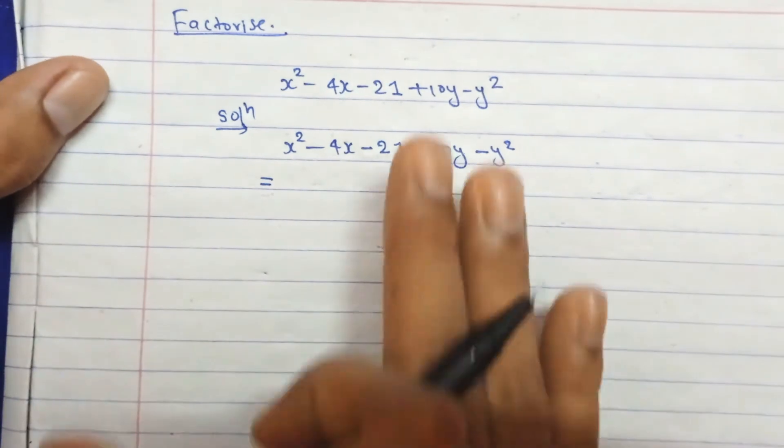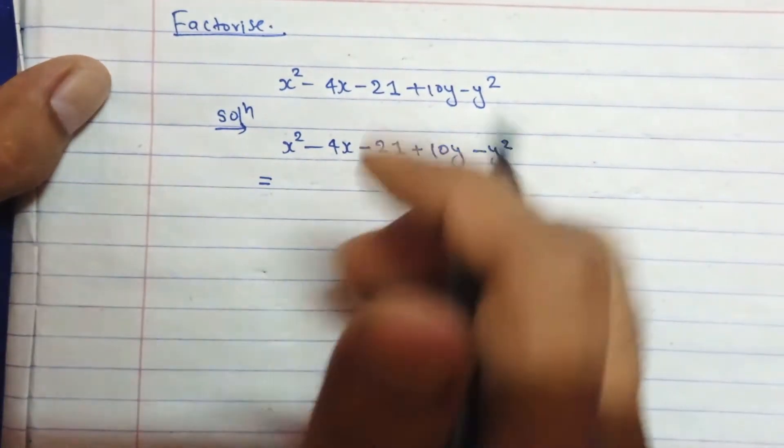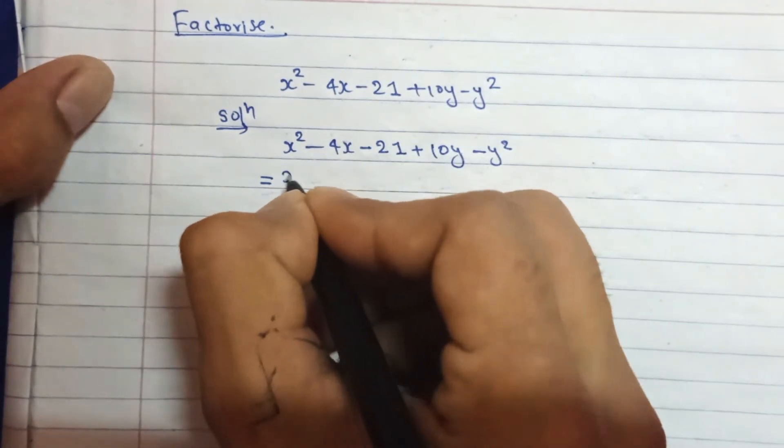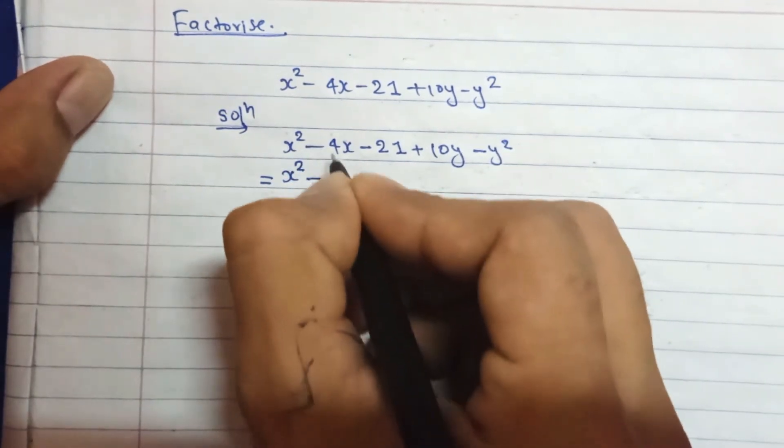To find the LCM and HCF, let's factorize it. To factorize it, firstly write it as it is, and then you can write 4x in the form 2 times 2 times x.